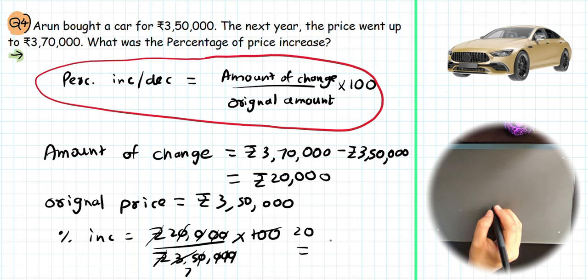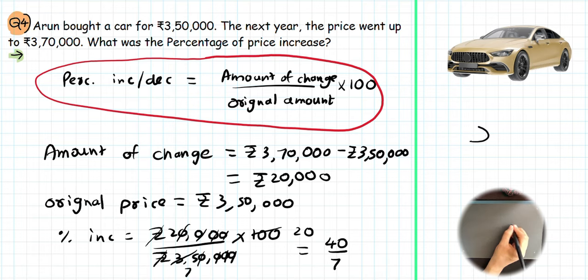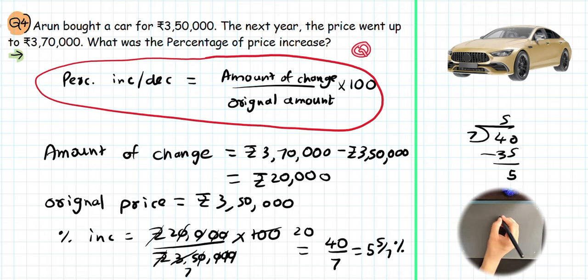After canceling and simplifying, we get 40 in the numerator and 7 in the denominator. Dividing 40 by 7, we get 5 and 5/7. So the percentage is 5 5/7 percent. Our question number 4 is complete.